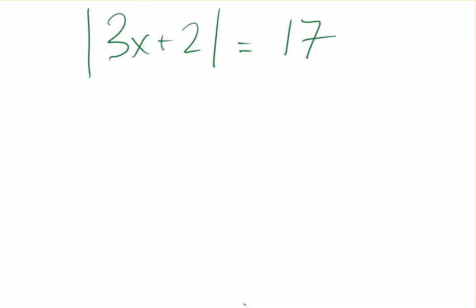Let's say you have the absolute value of 3x plus 2 equals 17. What this actually means is whatever is on the left is equal to 17 or negative 17. This absolute value takes everything inside and makes it positive. So if you get an answer that's negative 17 inside here, it's still going to be equal to 17.